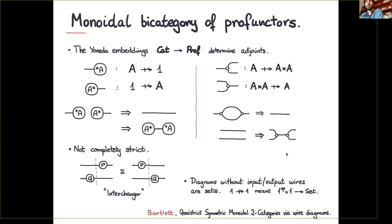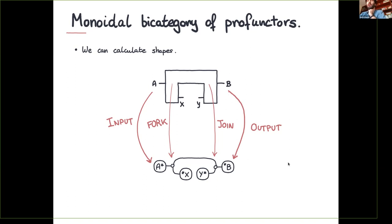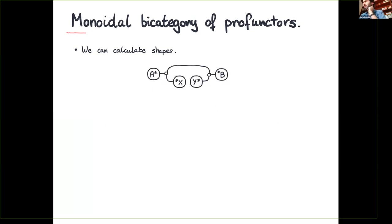An important observation: diagrams without input and output wires are precisely sets — a profunctor from 1 to 1 is precisely a map to Set, so it determines a set. This is how we get the sets corresponding to shapes. When we interpret a shape in the monoidal bicategory of profunctors, we take inputs to be representable functors, outputs to be co-representable functors, and map forks and joins to the monoidal structure of the category.